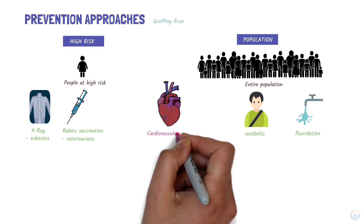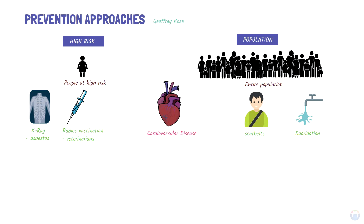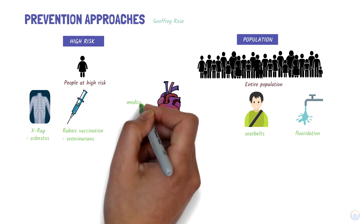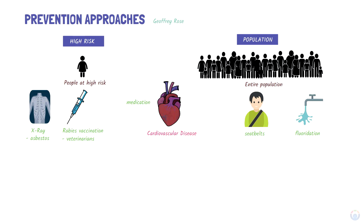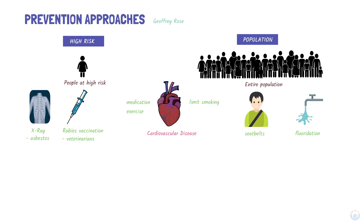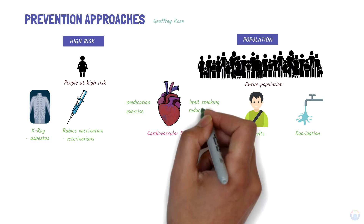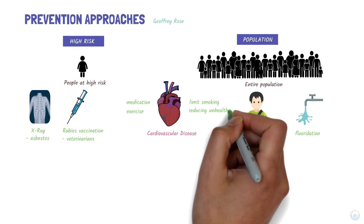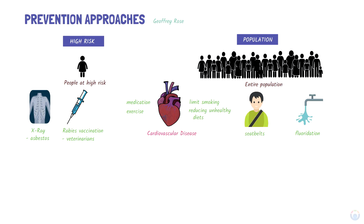Let's take cardiovascular diseases as an example. High-risk prevention strategies include medication to control hypertension or an exercise program for those with a high body mass index. Population-wide prevention strategies include limiting access to smoking through bans or increasing taxes, or reducing unhealthy diets by eliminating trans fats or increasing taxes on sugar-sweetened beverages.